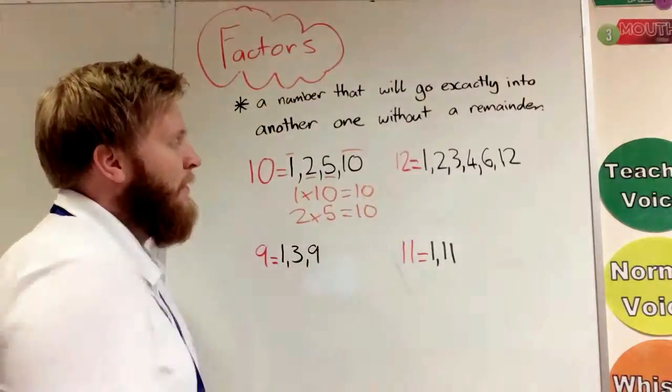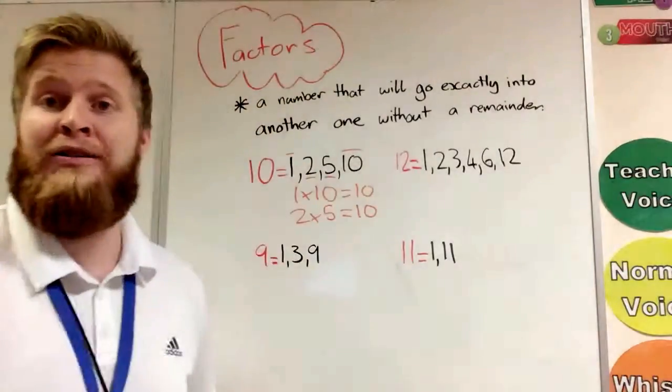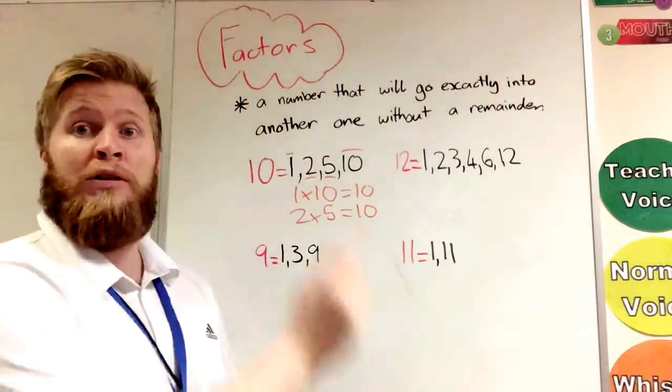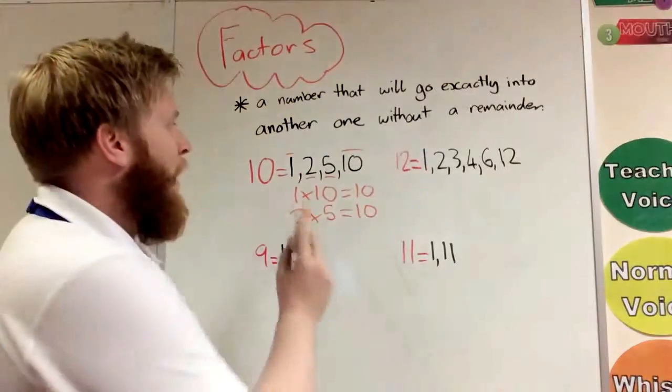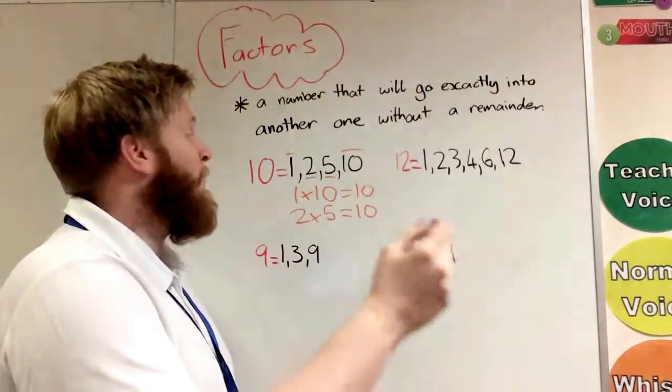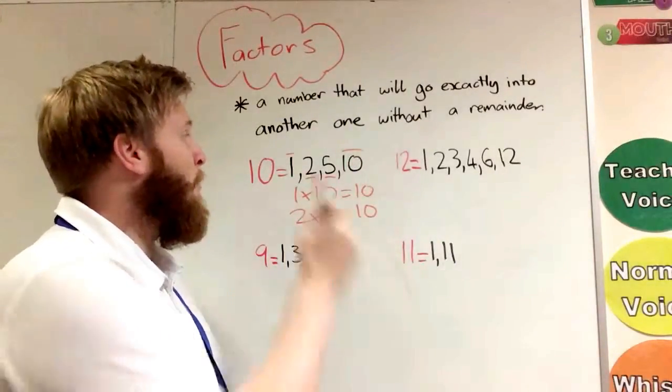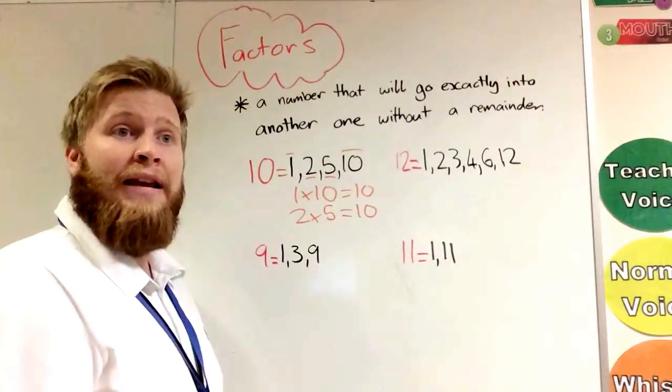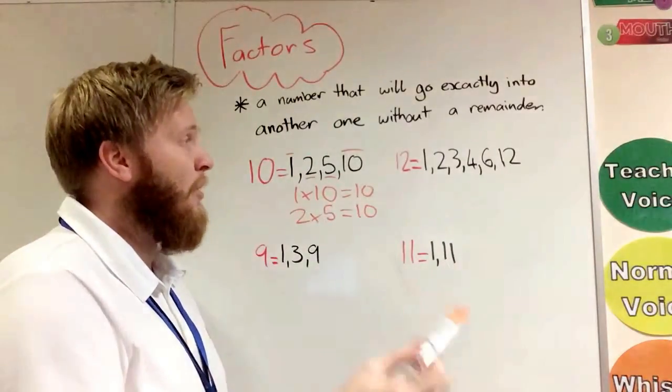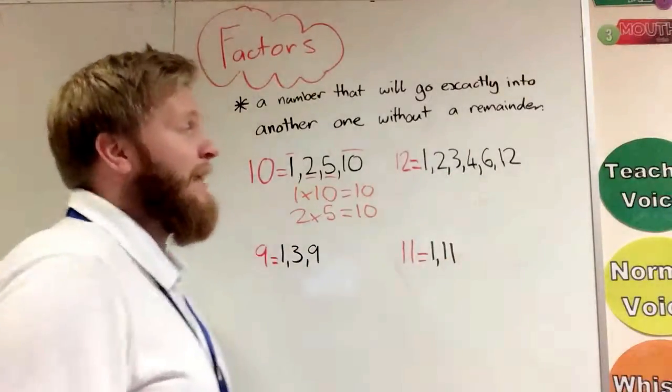equals 10. So factors tend to come in factor pairs. Mostly—we'll have a look when they don't a little bit later on. So the factors of 10 are 1, 2, 5, and 10, because when we go in the multiplication table, we get to 10 without there being any remainders.